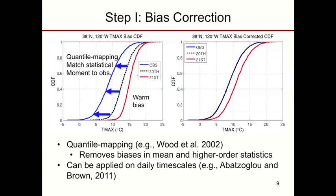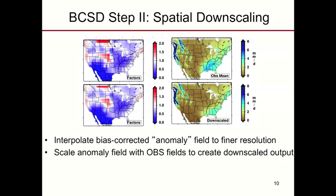After bias correction, we force our GCM data to adhere to the statistical moments of our observed data set. We adjust the 20th century runs using an aligned observational period, then apply those same distributions to our 21st century runs — basically assuming the bias is preserved over time. This has historically been done for bias correction on monthly data, but it can be done on daily timescales as well. The second step of BCSD is the spatial downscaling, where bias-corrected GCM data is interpolated to the target grid and scaled to the observational field.